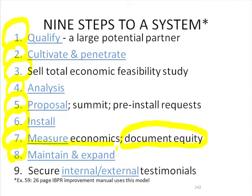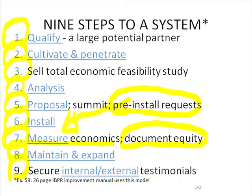We want to make sure that on the proposal — step number five — we have some pre-installation requests where we say we're not going to go ahead and do steps six, seven, and eight unless we have somebody who's going to cooperate with us and be responsible for measuring these things.